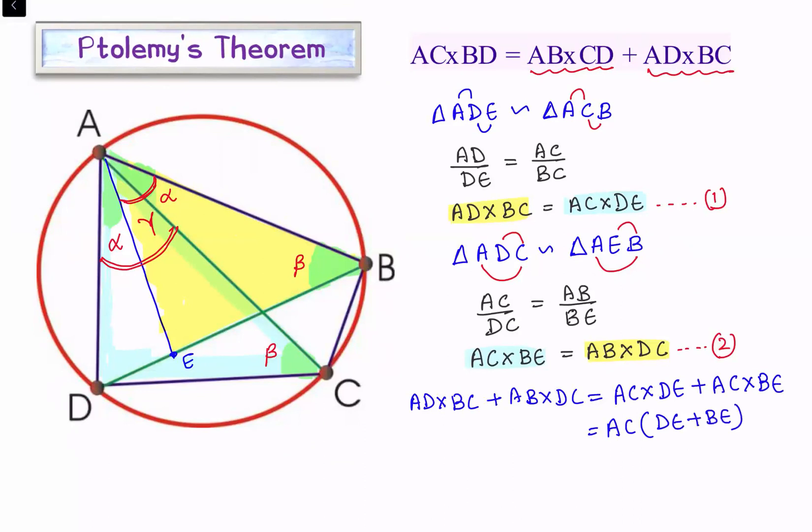And if we see DE plus BE—this is your DE and this is your BE—so DE plus BE is nothing but BD. So this is AC times BD. And that's our result. Hence proved.